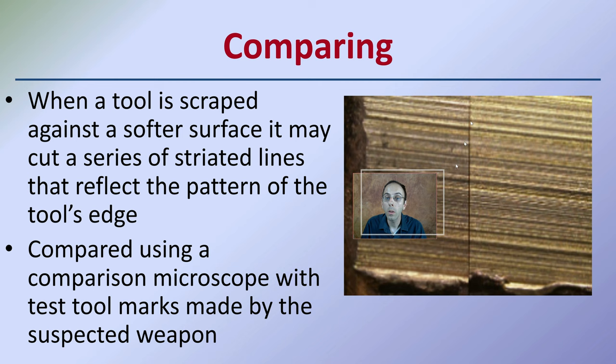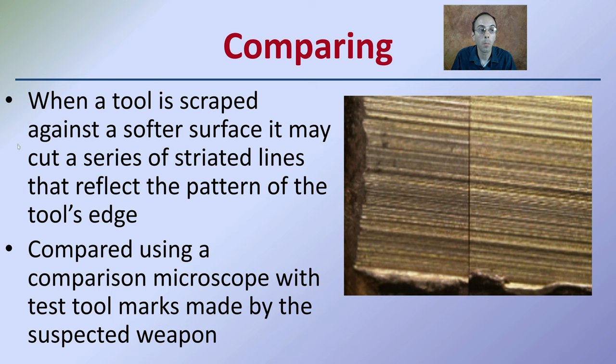When doing these comparisons, it's important that when a tool is scraped against a softer surface, it may cut a series of striated lines that reflect the pattern of the tool's edge. These are compared using a comparison microscope with test tool marks made by the suspect's weapon, to see if the ridges and valleys can be matched up. In the image shown, where the line splits left to right, you can see a lot of consistencies in that comparison.